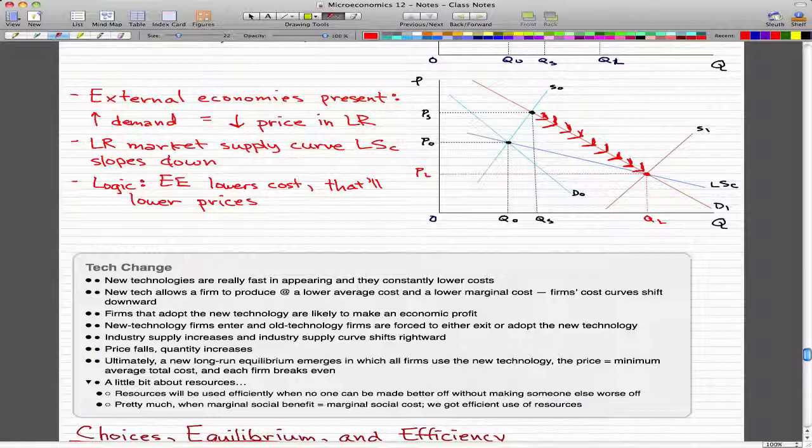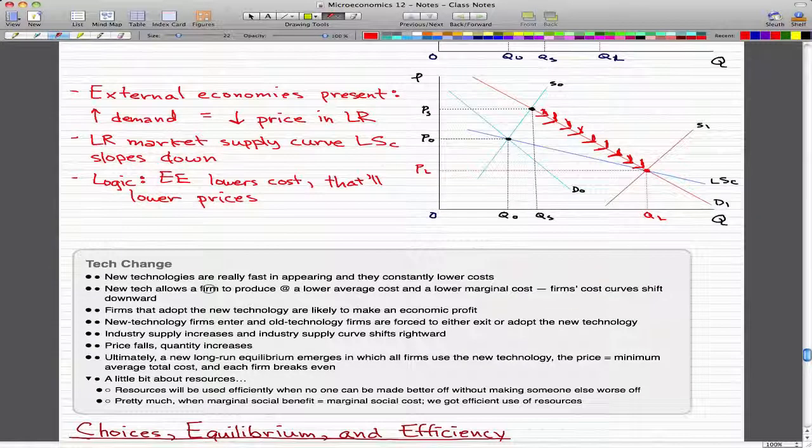Eventually, a new long-run equilibrium emerges, in which all firms use the new technology. The price equals the minimum average total cost, and each firm will break even, or make zero economic profit.